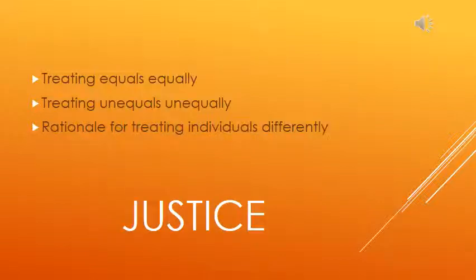Justice has been defined as treating equals equally and unequals unequally, but in proportion to their relevant differences. Justice does not mean treating all individuals the same. If an individual is to be treated differently, the professional needs to be able to offer a rationale that explains the necessity and appropriateness of treating the individual differently. An example of justice is that a professional would give a person who is blind a form in Braille, or would go through the form with that individual orally, instead of giving a standard written form to fill out, but would treat him or her the same way as any other client in all other regards.